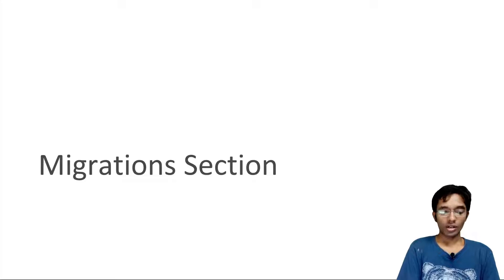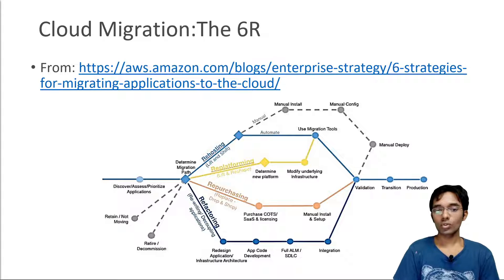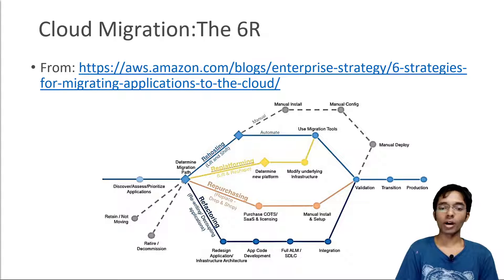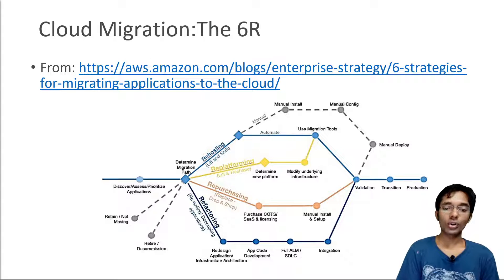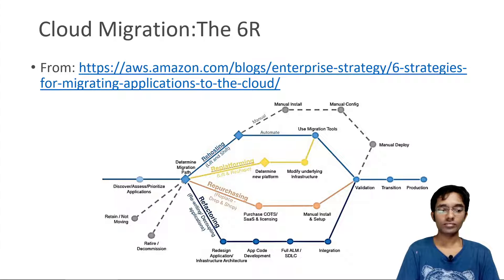We'll start with cloud migration and the six R's in this lecture. There is a blog from AWS defining six strategies to migrate applications to the cloud, also called the six R's. There is a complex diagram in that blog, but I will go over all six R's and explain them with examples. I still recommend you read the blog on your own time to solidify your learning.